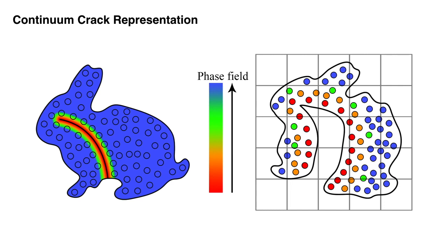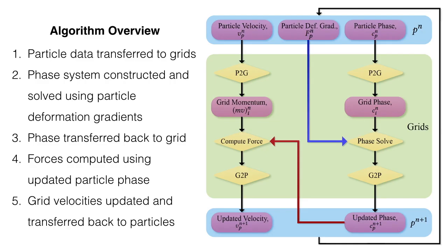We begin with an overview of PFFMPM basics. In material space, discontinuity is approximated with a continuous phase field. PFFMPM uses particles to carry the phase field in world space, while the phase field evolution equation is discretized on a background scratchpad grid. PFFMPM utilizes a staggered integration scheme with two system solves on the grid: one for momentum and one for phase. The blue and red arrows show key details in our data flow — blue represents the dependence of the grid phase solve on particle deformation gradients, and red shows the incorporation of updated phases in the grid force update.